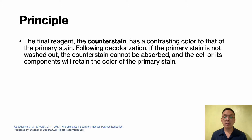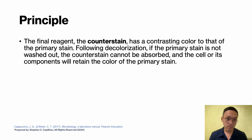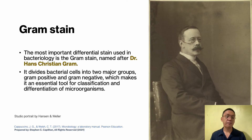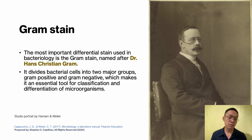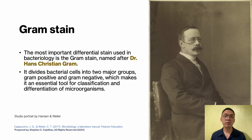The most important differential stain used in bacteriology is the gram stain, named after Dr. Hans Christian Gram. This staining technique divides bacterial cells into two major groups: gram positive and gram negative, making it an essential tool for classification and differentiation of microorganisms.